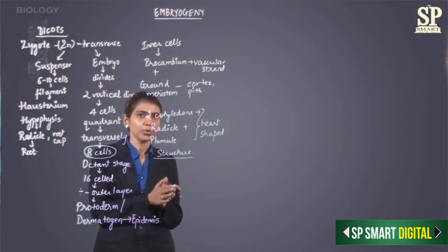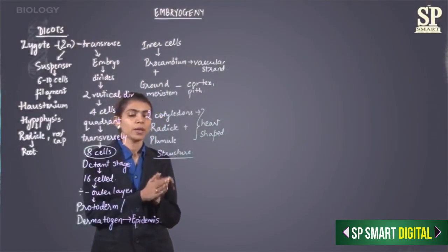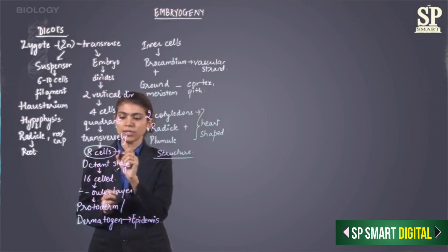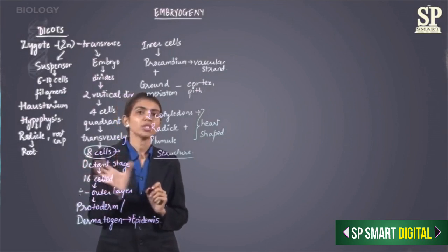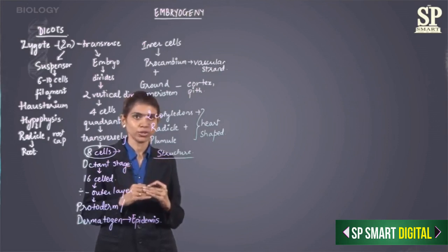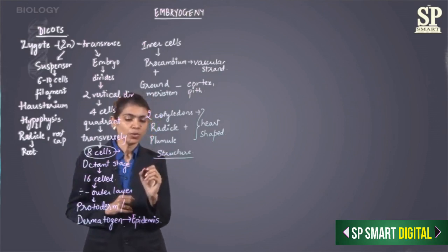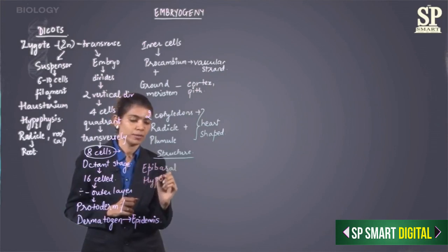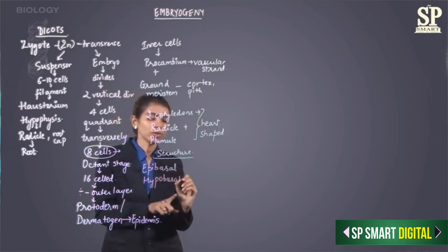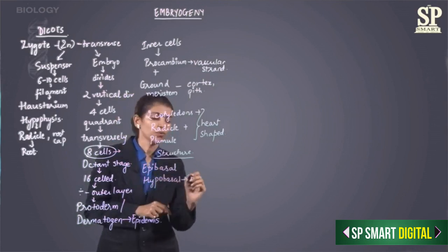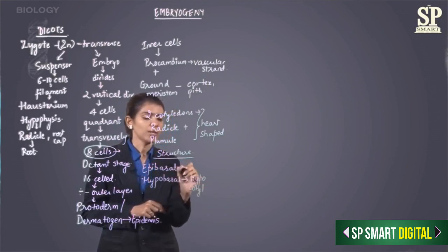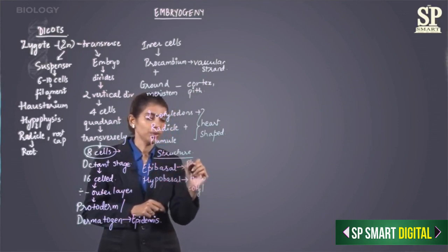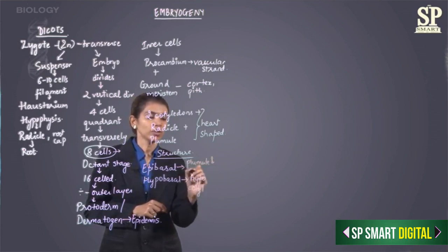Coming to the structure of the embryo in dicotyledons: when the embryo was at the 8-cell stage, these eight cells were arranged in two tiers — two layers of four each. The upper one was called the epibasal layer and the inner one was called the hypobasal layer. The hypobasal would go on to form the hypocotyl, and the epibasal would go on to form the plumule and the cotyledons.